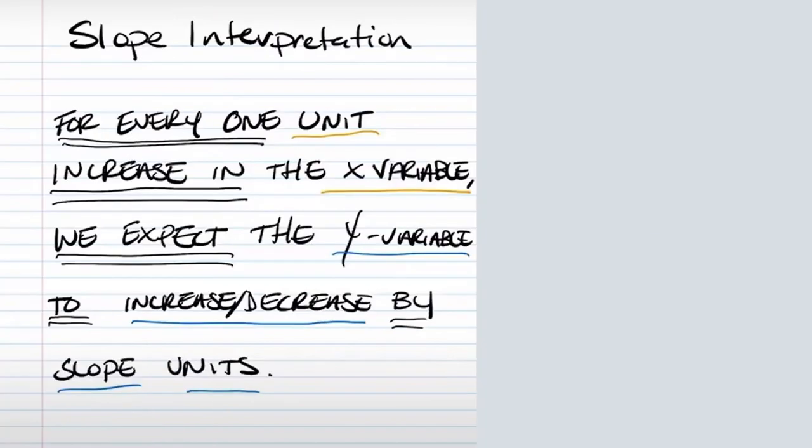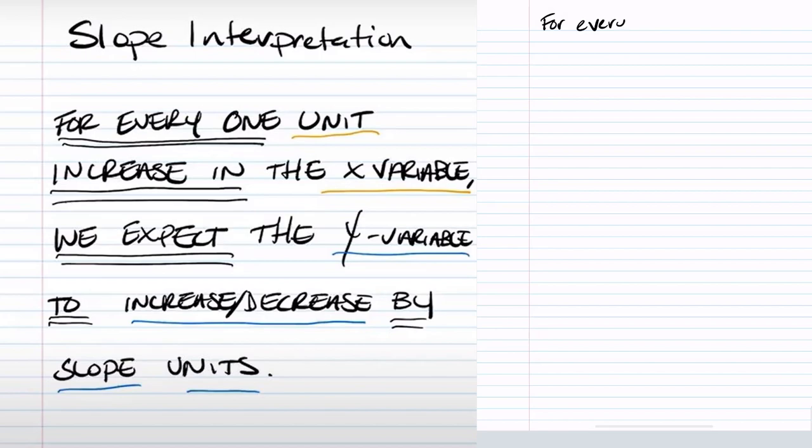So x remember is going to be whatever the value is for speed, and we are predicting distance to stop.